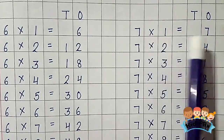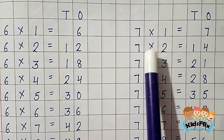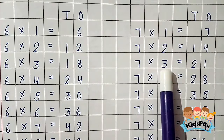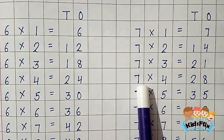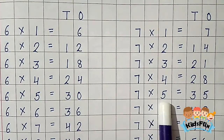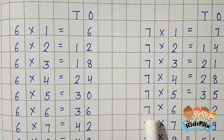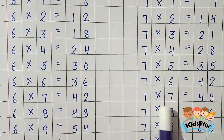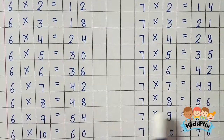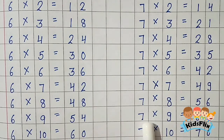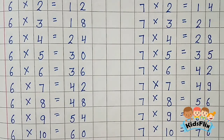7 1s are 7. 7 2s are 14. 7 3s are 21. 7 4s are 28. 7 5s are 35. 7 6s are 42. 7 7s are 49. 7 8s are 56. 7 9s are 63. 7 10s are 70.